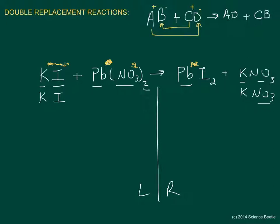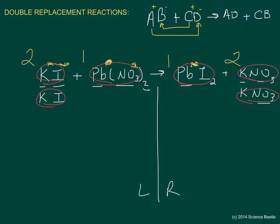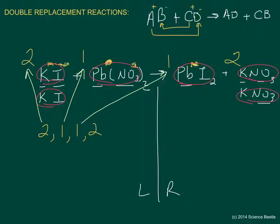All that's left is to count the amounts of each compound and write the coefficients. For KI we have two, so the coefficient is 2. For lead nitrate we have one, so the coefficient is 1. For lead iodide PbI₂ the coefficient is 1, and for potassium nitrate KNO₃ the coefficient is 2. So if this were a multiple-choice problem, you'd be looking for the coefficient sequence: 2, 1, 1, 2.